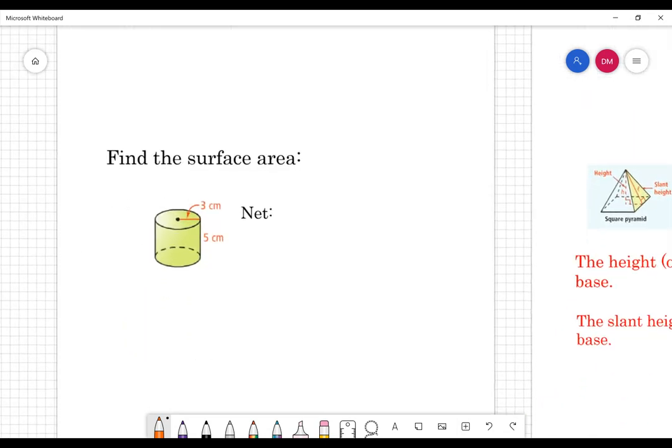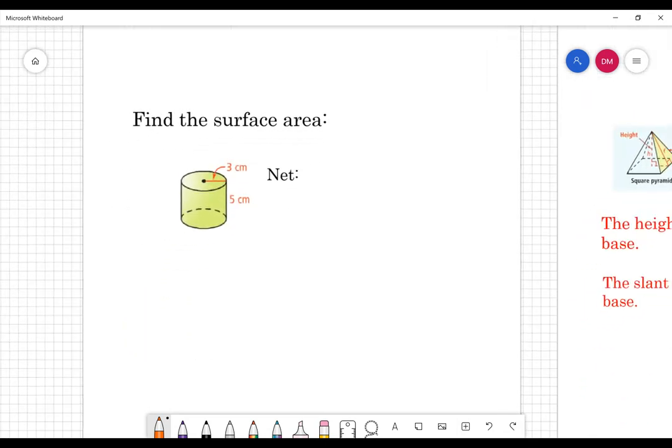Now, I want you to go ahead and pause this video and draw this cylinder and go ahead and draw the net, label all the corresponding pieces. You have radius and height here. And once you've done that, unpause the video, come back and let's find the surface area.